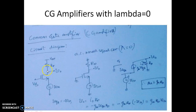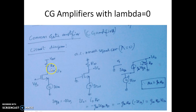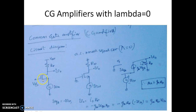This is the Common Gate Amplifier circuit diagram. The input is applied to the source, the gate is applied with the bias voltage VB, and the output is taken at the drain. It is called Common Gate because the input is applied with respect to ground and the output is measured with respect to ground — the gate is common between both input and output. That is why it is called Common Gate Configuration, as seen in the AC small signal circuit.